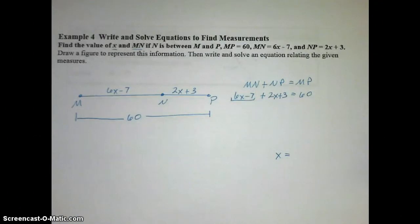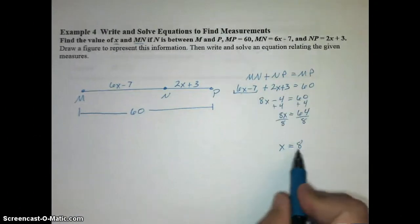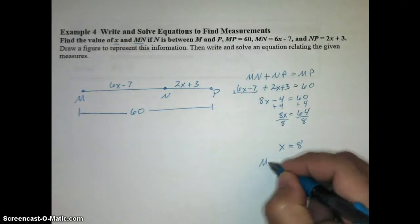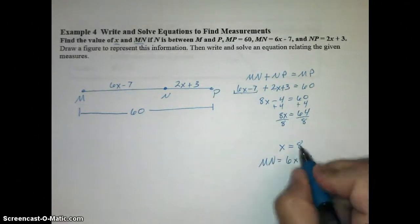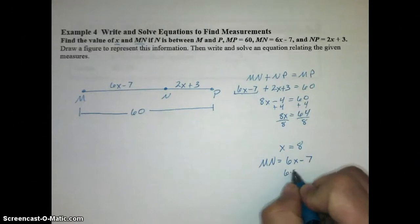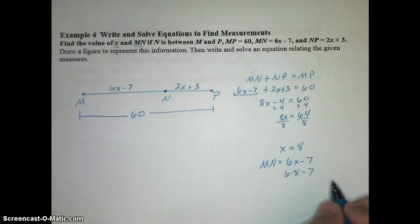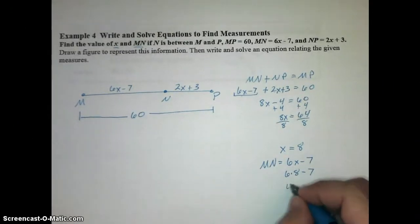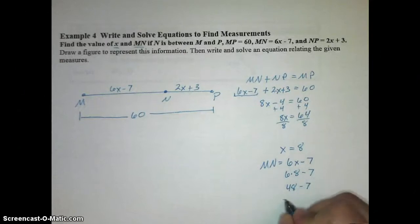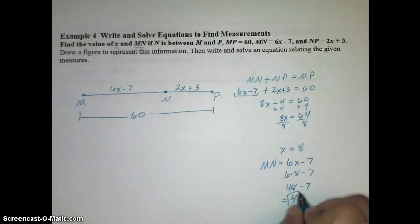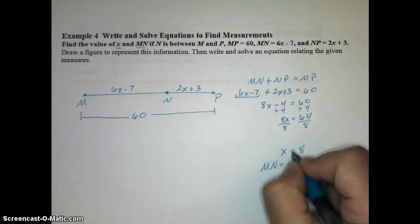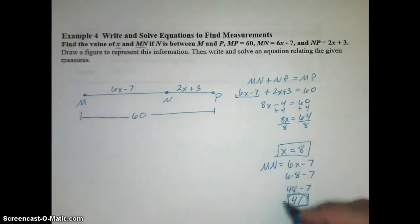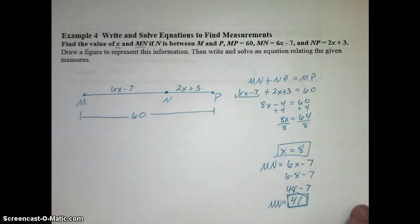This is what we should get for our value of X. X should equal 8. That means I can take my expression for MN, 6X minus 7, and plug 8 in for X. So I'm going to do 6 times 8 minus 7, which is 48 minus 7, which is 41. So X equals 8, MN equals 41.